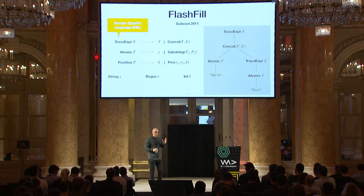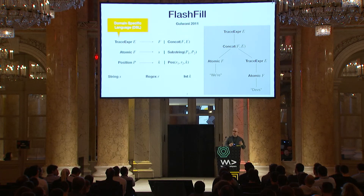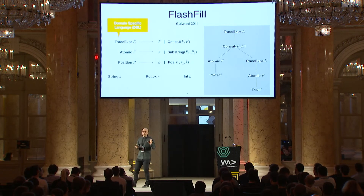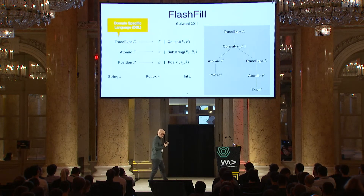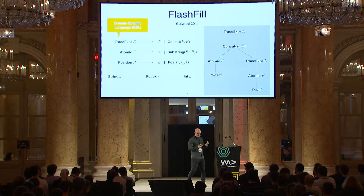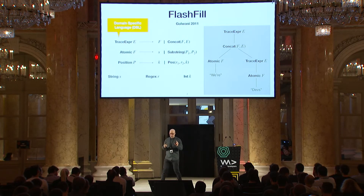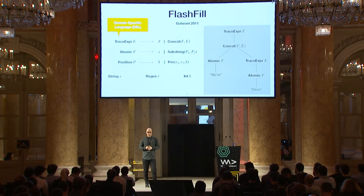So now we've identified two components of the Flash Fill synthesis process: we communicate user intent through input-output examples, which is fairly easy; and our space of possible programs is defined by this domain-specific language with its grammar. The most interesting part is how we search — given certain input-output examples, how do we find an expression in this DSL that matches them?